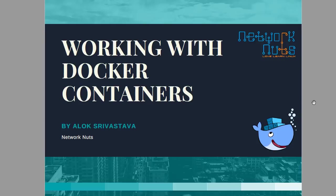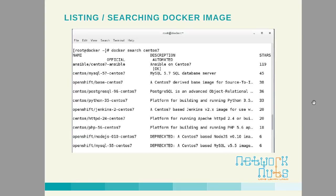Number one: you should be able to search for Docker images using the docker search command. As you can see in the slide, I am searching for the CentOS 7 image. Your Docker host will go to Docker Hub and search for all images having the CentOS 7 name. Stars are very important — they are like ratings, and you should always try to use the official image as much as you can.